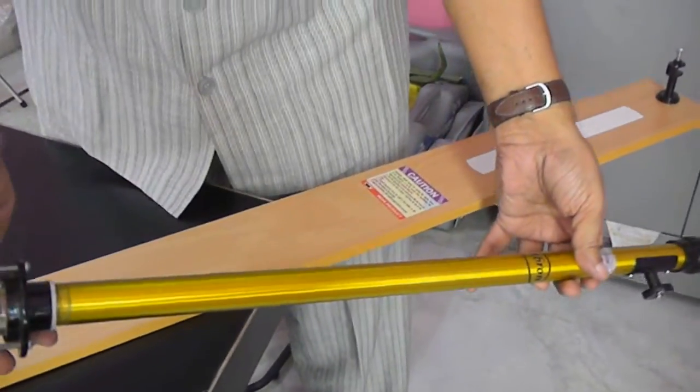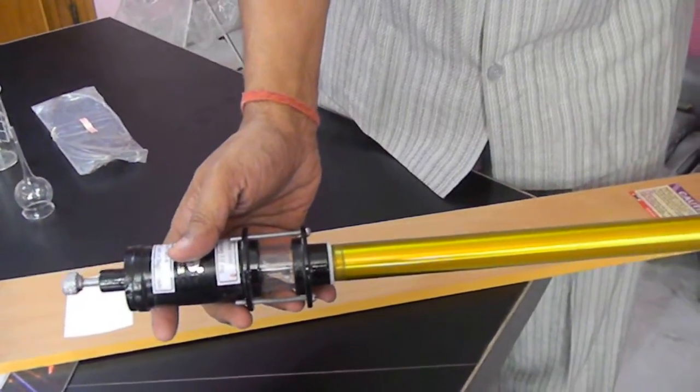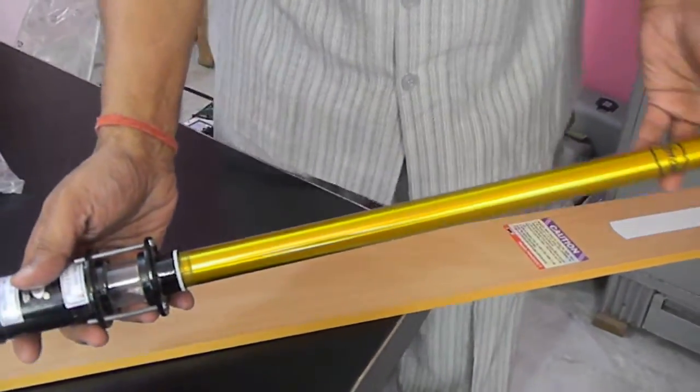And then after that, the mercury will be filled in this. Slowly turn it like this.